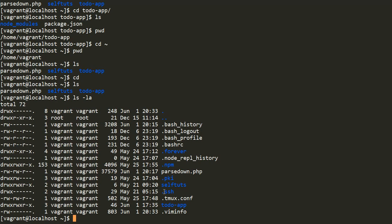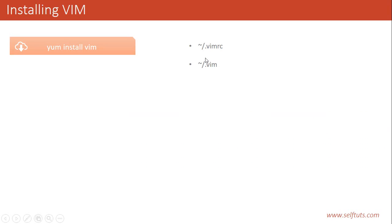Everything starting with a dot is a hidden file. If you install Vim for the first time, the .vimrc file and .vim folder may or may not be present. If they are not present, it will not hamper the process of starting Vim. But if you want to apply some configuration, you must have a .vimrc file, and if you are using a plugin, you must have the .vim folder.